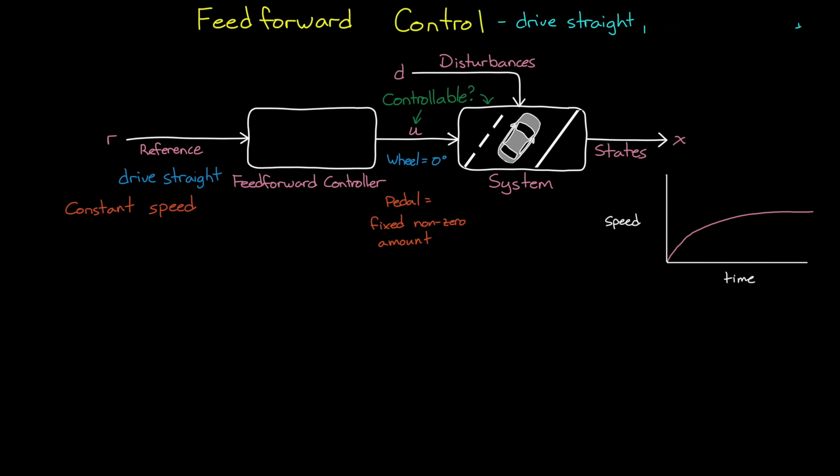However, let's say that we want the car to reach a specific speed, like 30 miles an hour. We can actually still do it with a feed-forward controller, but now the controller needs to know how much to depress the accelerator pedal in order to reach that specific speed. And this requires knowledge about the dynamics of the system. And this knowledge can be captured in the form of a mathematical model.